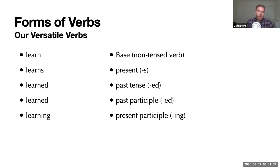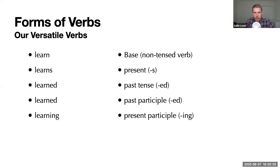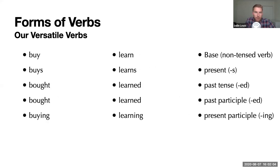When a verb takes these usual inflections, we call it a regular verb, like learn becomes learns, learned, learned, or learning. But of course, when it doesn't, we call that an irregular verb. So there's buy and buys, but then it becomes bought and bought and then buying. So the past tense and the past participle are irregular.